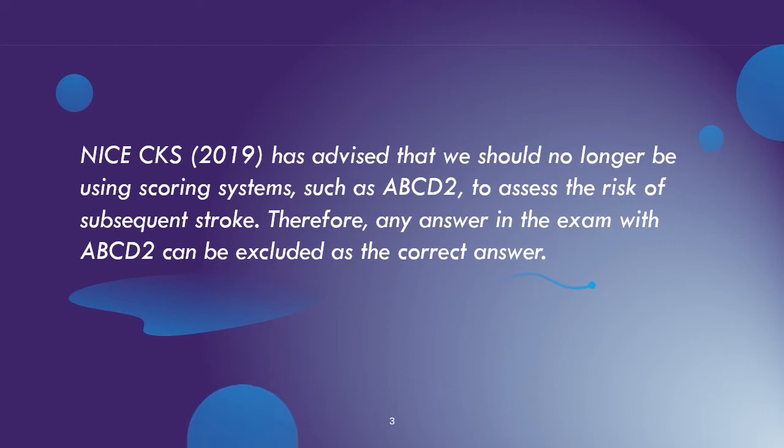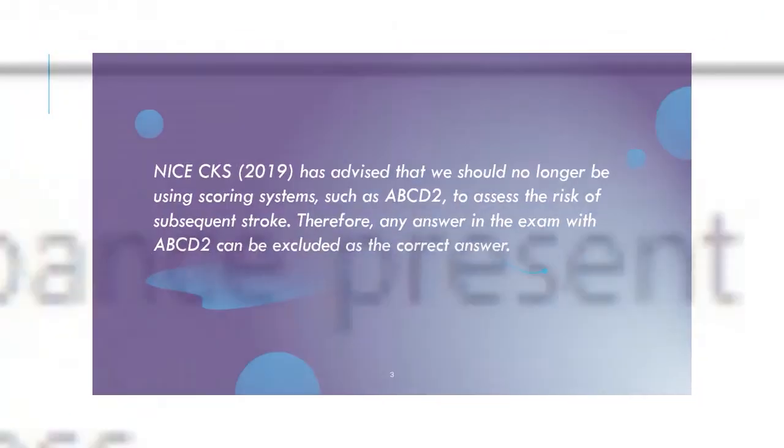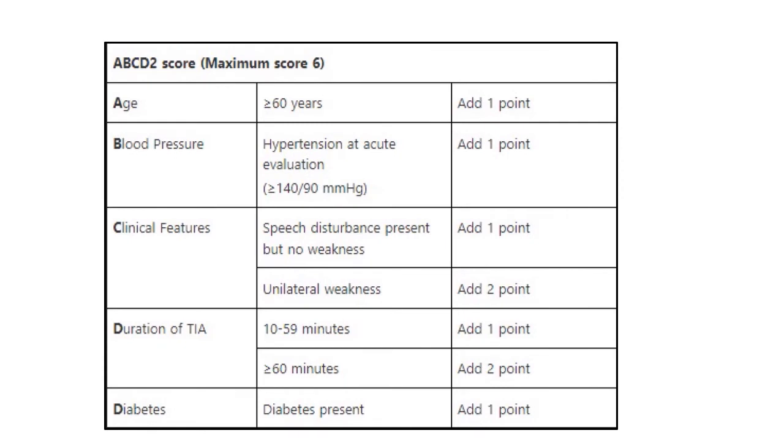Now we see what this scoring system looks like. So this is the ABCD2 score. It contains a maximum of six points.